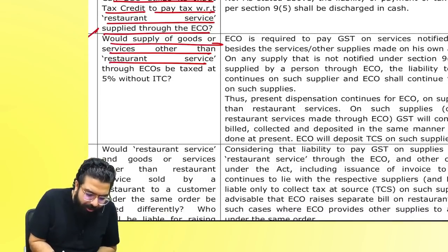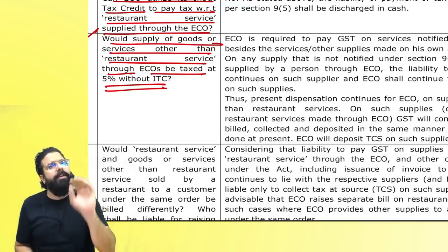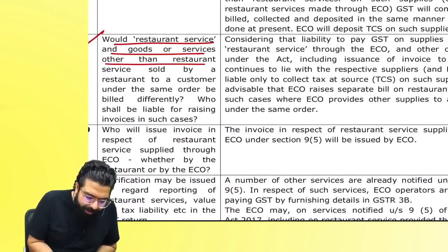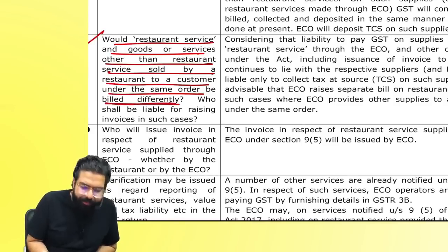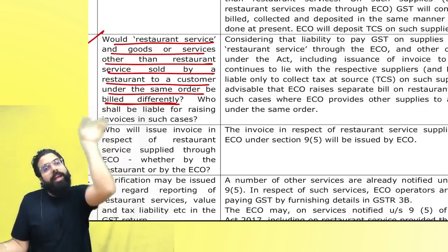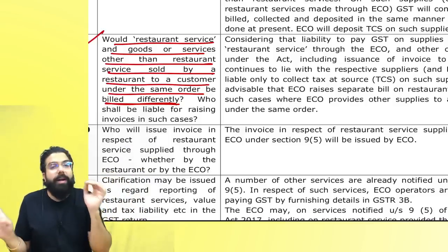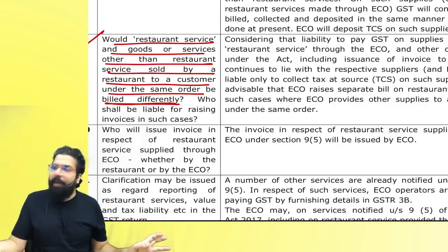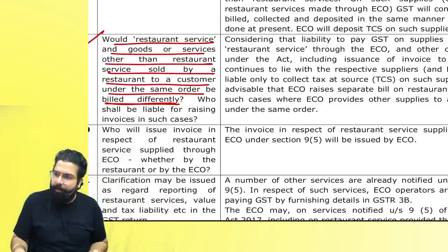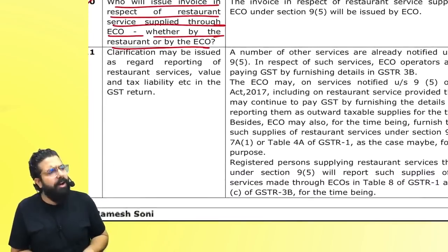Only restaurant services attract the 5% GST rate without ITC when supplied through e-commerce under Section 9(5). For goods or services other than restaurant service supplied through e-commerce, the applicable GST rate under normal provisions applies. When a restaurant receives an order through e-commerce for both food and other goods, the e-commerce operator raises the invoice for the restaurant service portion, and the restaurant provides a separate invoice for the goods portion. The e-commerce operator is liable to issue the invoice and pay GST for the restaurant service component.